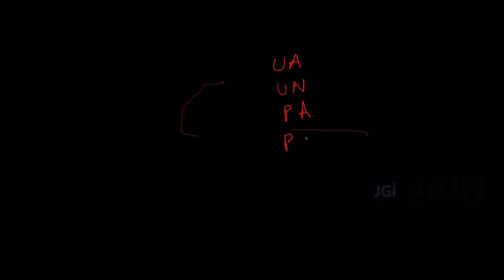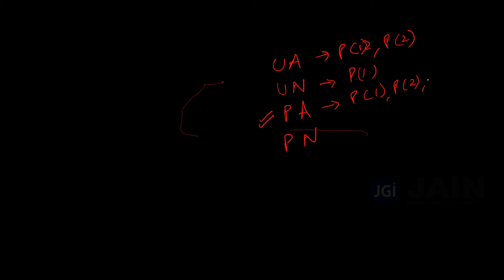So we looked at four types of statements: universal affirmative, universal negative, particular affirmative, and particular negative, and all their possibilities. For universal affirmative, there were two possibilities. For universal negative, only one possibility — disjoint sets. For particular affirmative, there were four possibilities because 'some' means at least one. For particular negative, there were three possibilities.